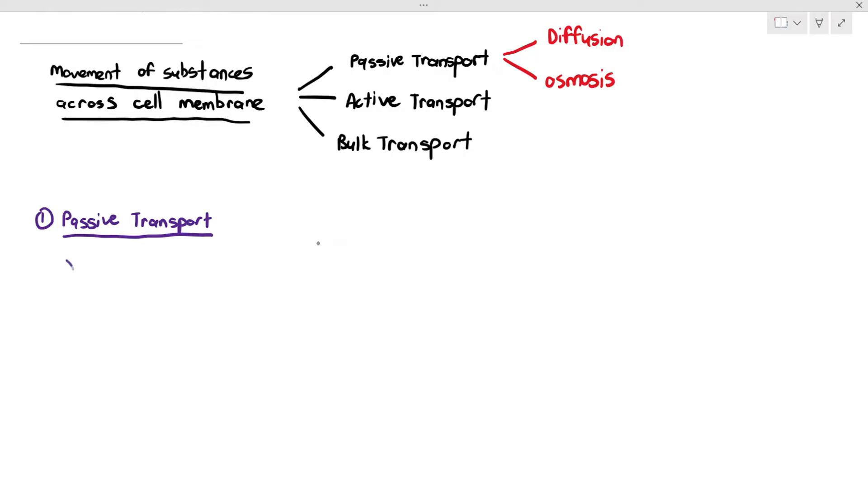Passive transport itself is basically the movement of substances down a concentration gradient, which basically means from an area of higher concentration to an area of lower concentration.